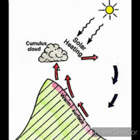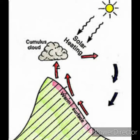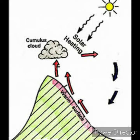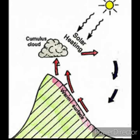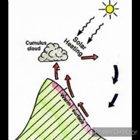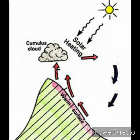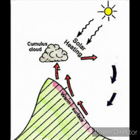Local winds are winds that blow over a small area only during a particular time of day or a short period of the year. Land and sea breezes are examples of local winds. In Rajasthan, these local winds are called loo winds.